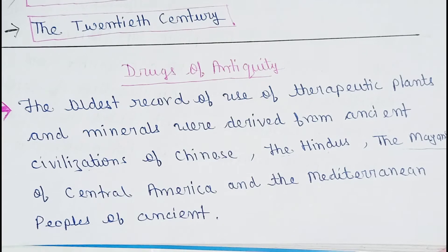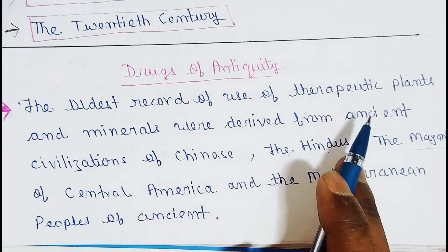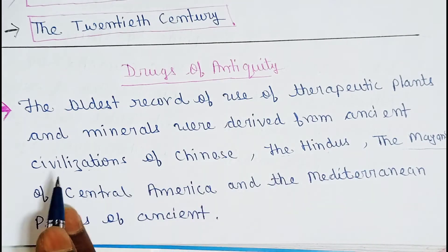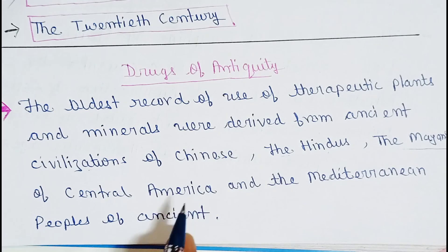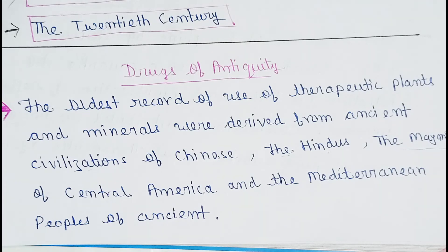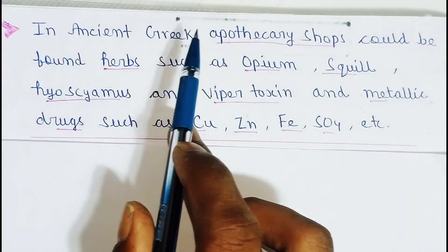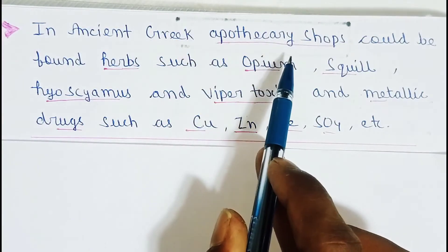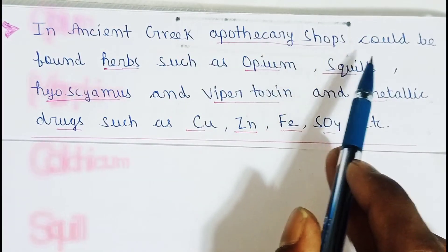जो हिंदूस लोग थे, जो मैंस के लोग थे, सेंट्रल अमेरिका के लोग — वो लोग therapeutic plants या फिर minerals का प्रयोग करके, उस वार जो diseases हो रही थी, उनको ठीक करते थे।